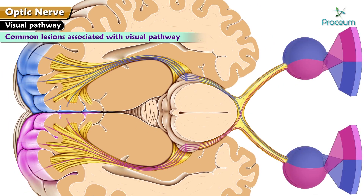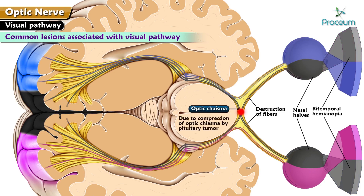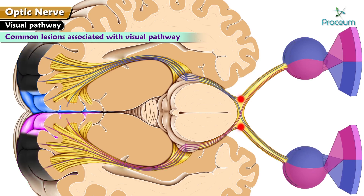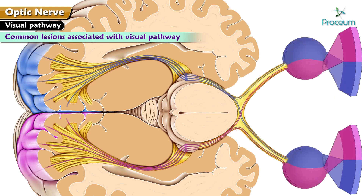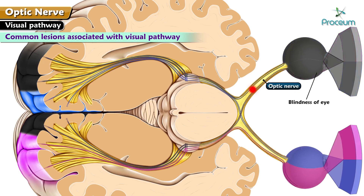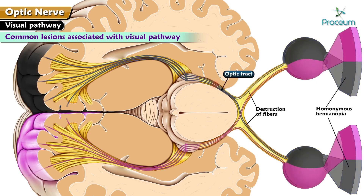Common lesions associated with the visual pathway. Lesions involving the central part of the optic chiasma result in destruction of fibers from both the nasal halves of the retina, causing bitemporal hemianopia. This may result due to compression of the optic chiasma by a pituitary tumor. Lesions involving lateral parts of the optic chiasma cause binasal hemianopia, as the fibers from the temporal halves of the retina are affected. Destruction of one optic nerve causes blindness of the affected eye; a common example is retrobulbar neuritis. Lesions in the optic tract result in homonymous hemianopia, which means loss of both the right halves or left halves of the vision.